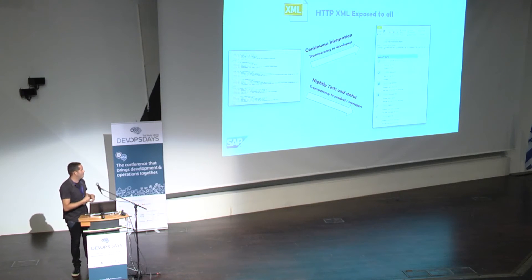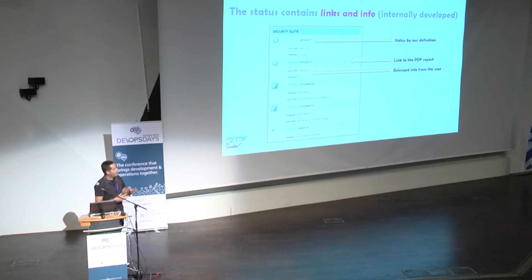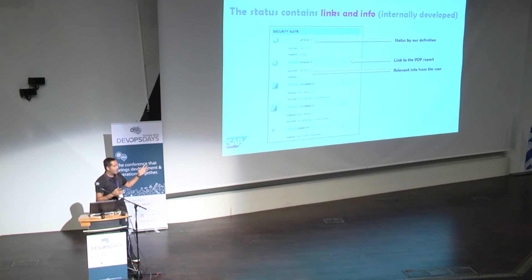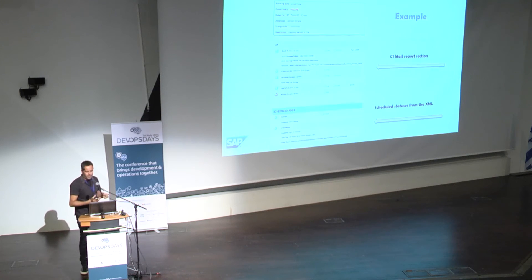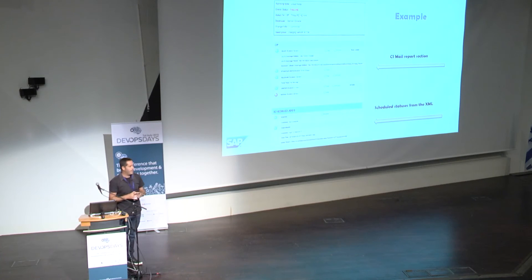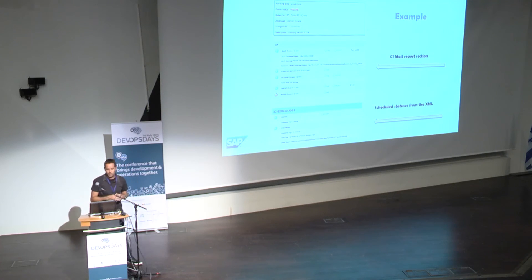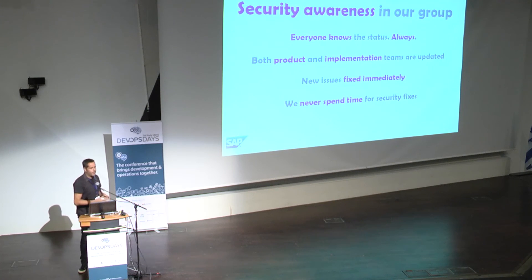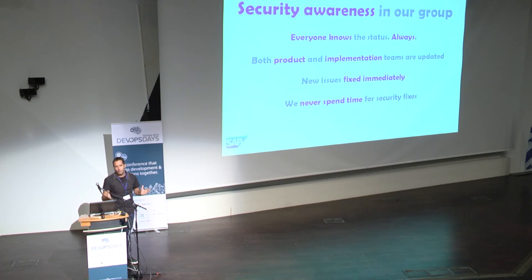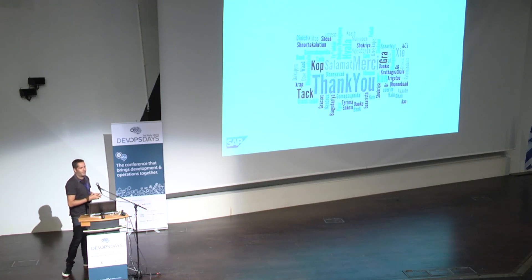Both for CI processes and for the nightly builds, this provides transparency to the product team. We can see the statuses of all steps for all scans and a clear status of the entire process. We also connect these reports directly to the CI mails, which keeps all developers inside the security scans loop. Everything provides transparency, everything is fixed immediately, and we never waste time on security fixes because we discover issues on the spot. Thank you very much.